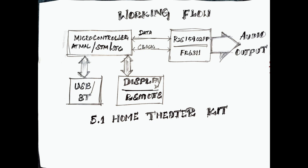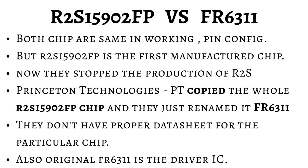This is the working flow of a home theater kit. The heart of the home theater is the microcontroller, which decides all the controls. The clock speed of the microcontroller determines the working flow of the remote kit, and the smooth flow has to be decided by the microcontroller. When selecting a microcontroller, choose one according to your needs. There are many microcontrollers available — STM, STC, and others. Based on our experience, STC is very reliable and cost-effective.